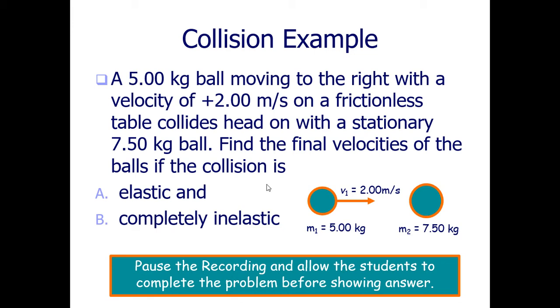So let's try an example. This is going to take a little bit longer. So we're going to look at two different collisions. You have a five kilogram ball moving towards the right with a velocity of plus 2.0 meters per second. On a frictionless table it collides directly head-on with a stationary object of 7.5 kilograms. Find the initial velocities of the ball if the collision is elastic and then secondly find the final velocities of the balls if the collision is completely inelastic which means it will be combined. Go ahead and pause the recording for a little bit. Allow the students to complete the problem. This one might take a little bit maybe about 10 minutes or so.